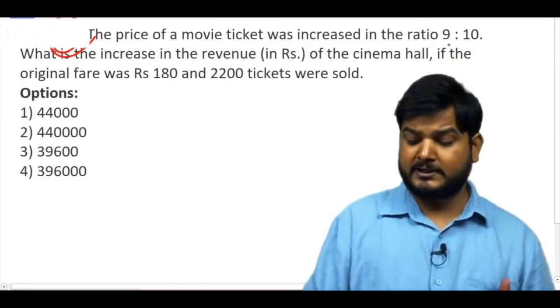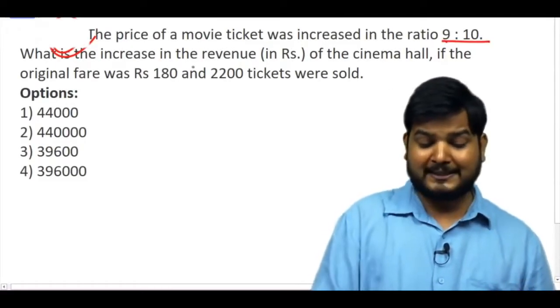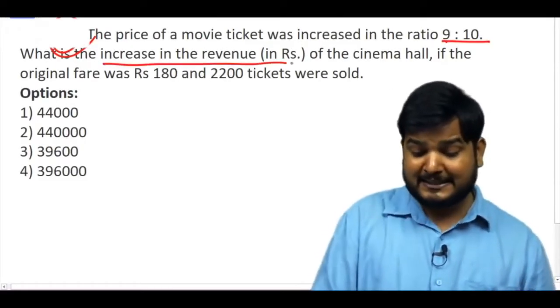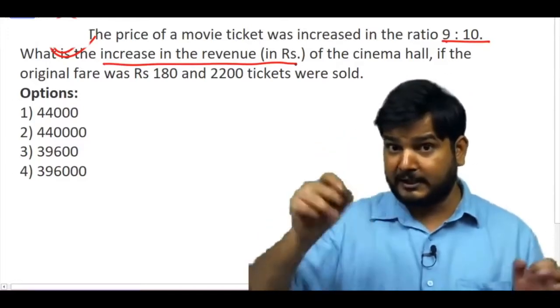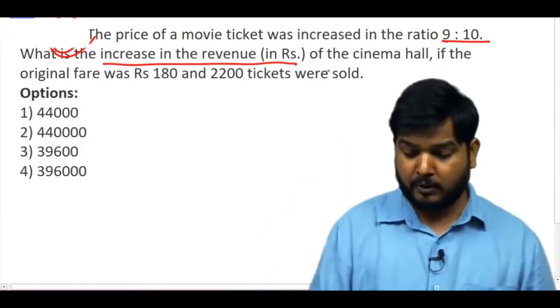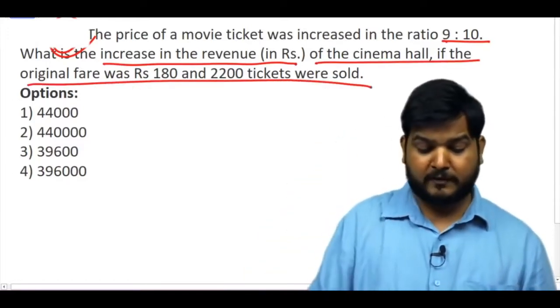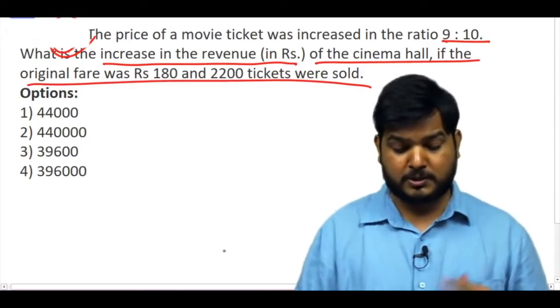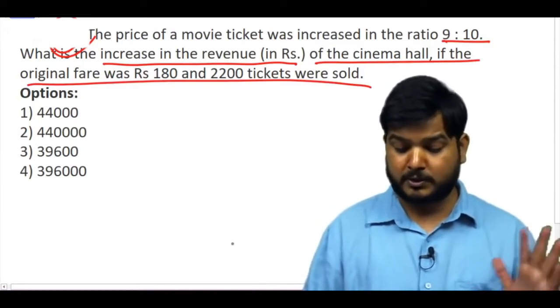The price of a movie ticket was increased in the ratio of 9:10. What is the increase in the revenue of the cinema hall if the original fare was Rs. 180 and 2200 tickets were sold?